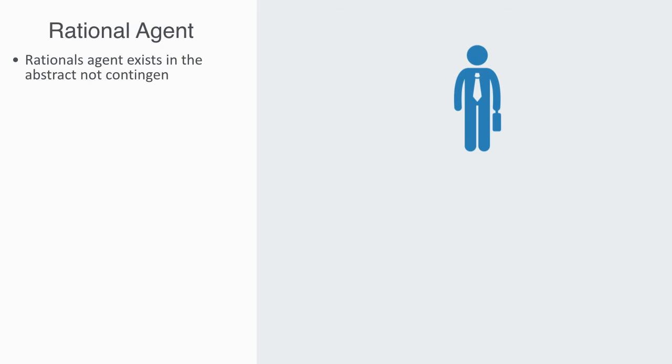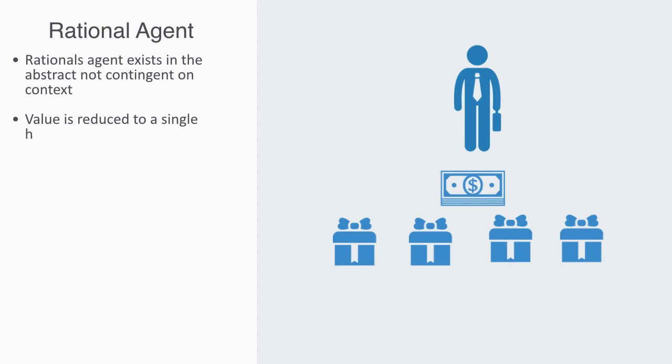Standard microeconomics is based on this model of the so-called rational agent. The rational agent exists in the abstract. That is to say, nothing in the model is contingent on context. Space and time do not exist in these models. Agents have a single conception of value. That is to say, all value is reduced to a single homogeneous form called utility. Within this model,